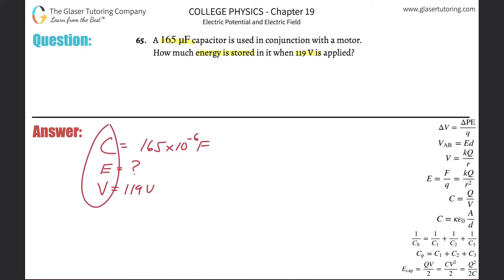So what's a formula that relates these three things together? Well, if you look through the list of formulas on the right-hand side, you'll come up with this one, right, that the energy stored in the capacitor is equal to the capacitance multiplied by the voltage applied to that capacitor squared divided by 2.